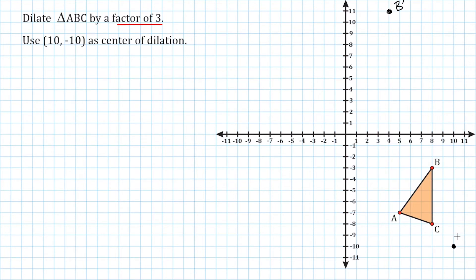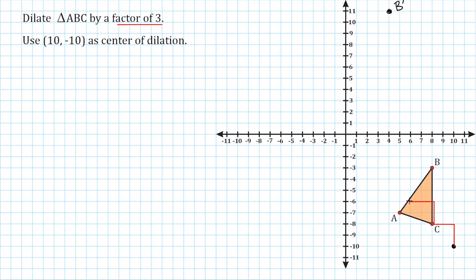Next, we figure out the slope between our center of dilation and point C. Starting at the center, we rise two and make a run of two to the left — that's positive two over negative two, equal to negative one. This initial movement represents scale factor one. We then repeat — up two and left two for scale factor two, and up two and left two again for scale factor three. Right here is the location of our new point C.